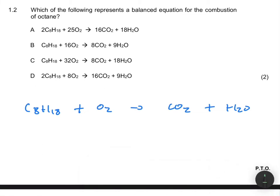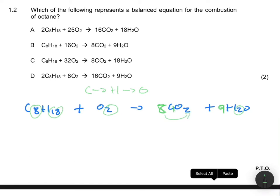On the left side we have 8 carbon atoms, and on the right side we only have one, so we put a coefficient of 8 in front of CO₂. You always start with carbon, then hydrogen, then oxygen — that order makes it much easier. For hydrogen, we have 18 atoms on the left and only 2 on the right. 18 divided by 2 is 9, so we put a coefficient of 9 in front of H₂O. Now for oxygen: on the right we have 8×2 = 16 plus 9, which gives us 25 oxygens.